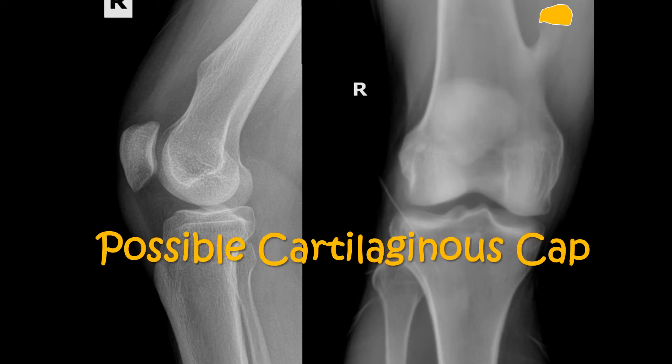There can also be a cartilaginous cap associated with osteochondromas. While 99% of these are benign, there is a rare malignant potential. In the rare chance malignancy does occur, it usually occurs around the cartilaginous cap, and this region is best evaluated on advanced imaging such as MRI.